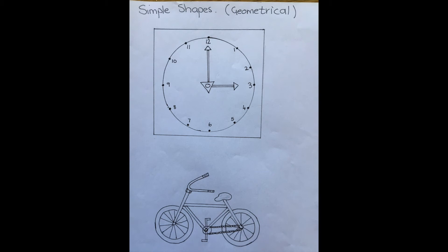If we have a look at our bicycle, we have circles for the wheels and the tires. We have a triangle for part of the frame, and a semicircle for our handlebars. A triangle for our seat, and our pedals are little rectangles as well.